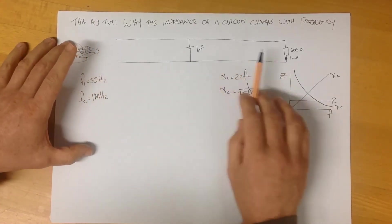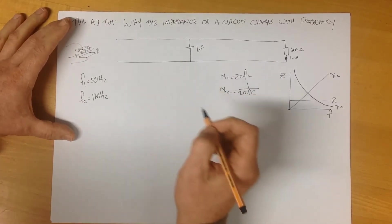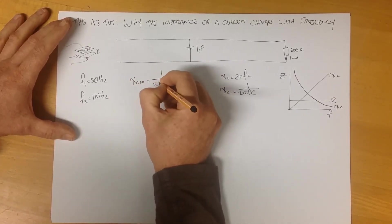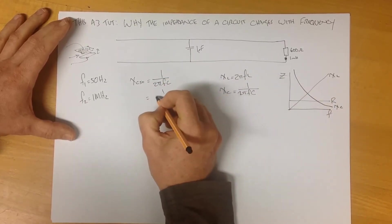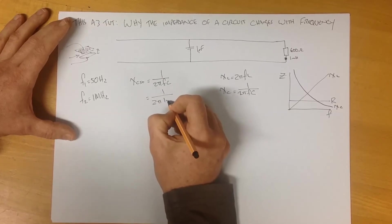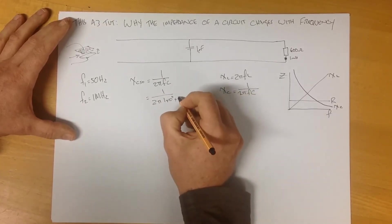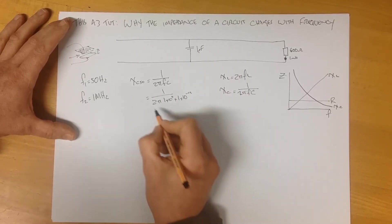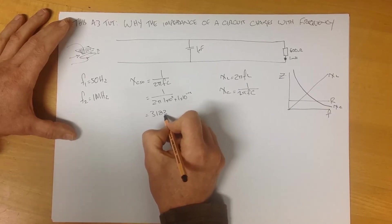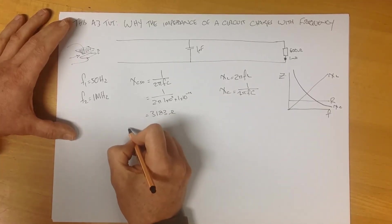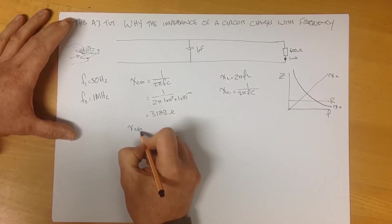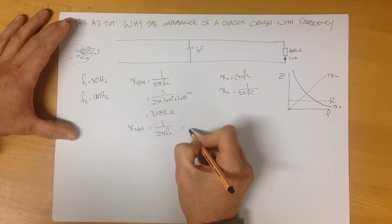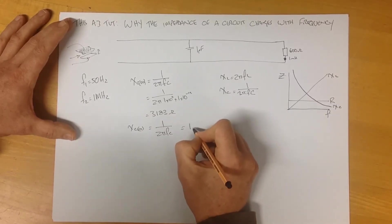So we can go through and we can calculate these impedances and see what's going on there. So first of all, if we take this capacitor here at 50 hertz, it's XC at 50 equals 1 over 2πfC, which is 1 over 2π, our frequency is 1 times 10 to the 6 times our capacitance, which is 1 times 10 to the negative 12. If you solve that, you will get an answer that's around about 3,183 ohms. Similarly, our capacitive reactance at 1 megahertz, 1 over 2πfC, will give us an answer that is around about 159 ohms.